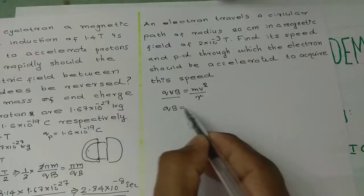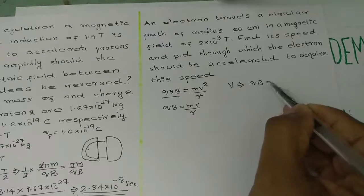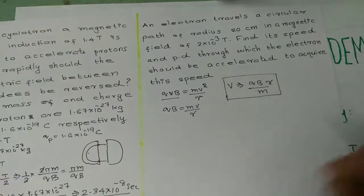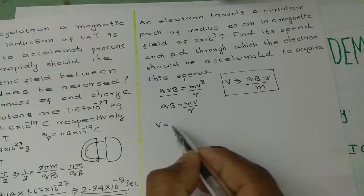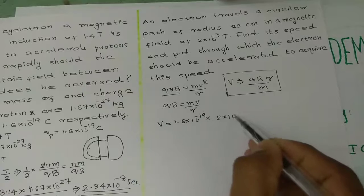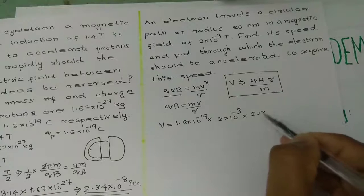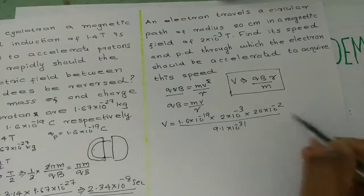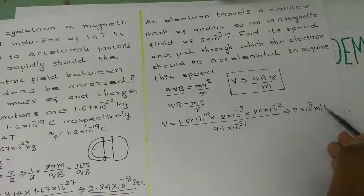From qvB = mv²/r, we simplify to get v = qBr/m. Substituting values: charge of electron = 1.6×10⁻¹⁹, B = 2×10⁻³, radius = 20 cm = 20×10⁻² m, mass of electron = 9.1×10⁻³¹ kg. On simplifying, we get v = 7×10⁷ meter per second.